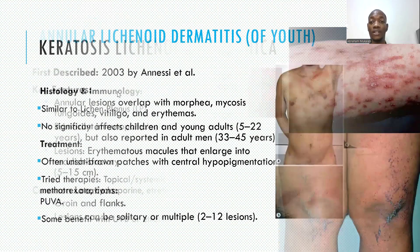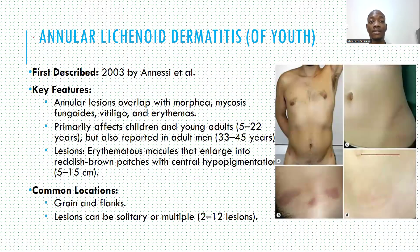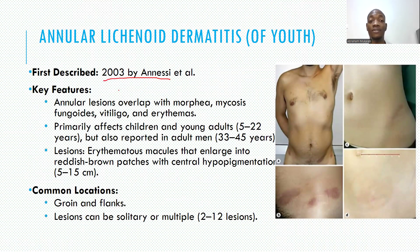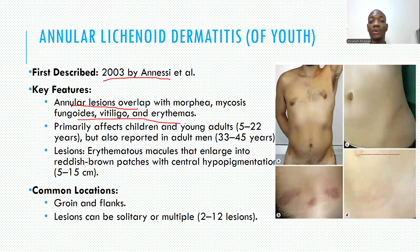The next condition, recently described in 2003, is annular lichenoid dermatitis of the youth. It was first described in 2003 by Anansi and colleagues. It has a characteristic feature of annular lesions that sometimes overlap with morphea, mycosis fungoides, vitiligo, or other erythemas.